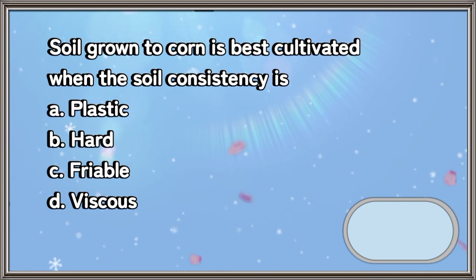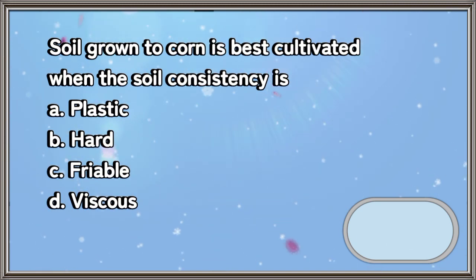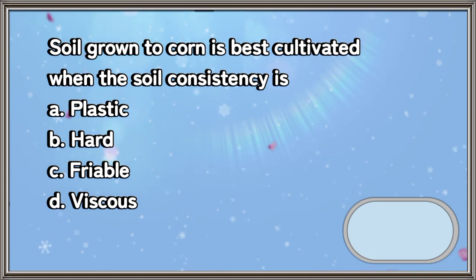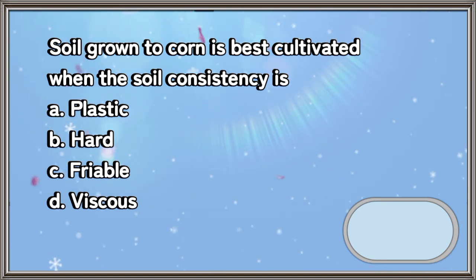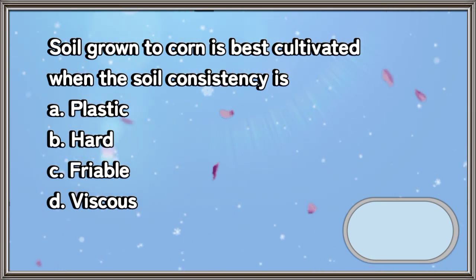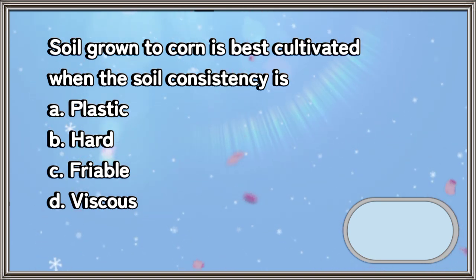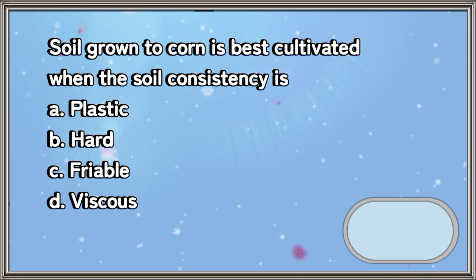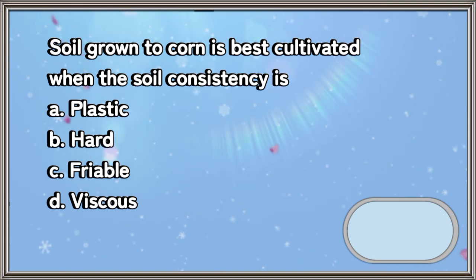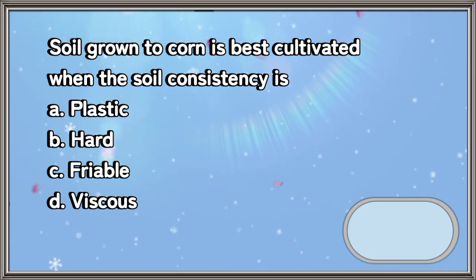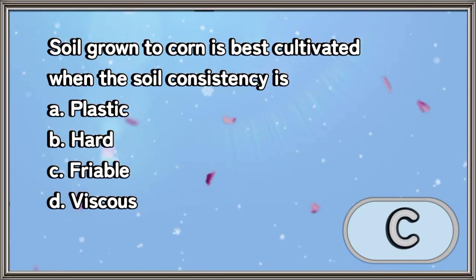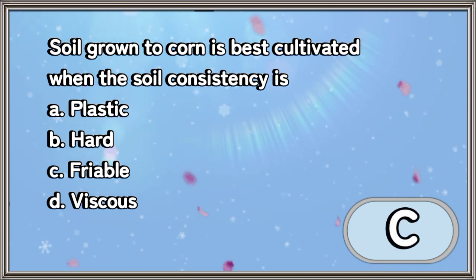Soil grown to corn is best cultivated when the soil consistency is: A. Plastic. B. Hard. C. Friable. D. Viscous. The answer is letter C.